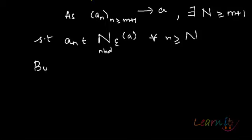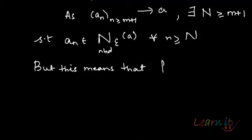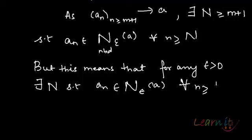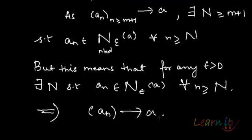But this actually means that for any given epsilon greater than 0, there exists an N such that a_n belongs to the epsilon neighborhood of a for all n greater than or equal to this capital N — which is the same as the definition of a_n converging to a. So this means that a_n does converge to a, and we have proved it both ways.